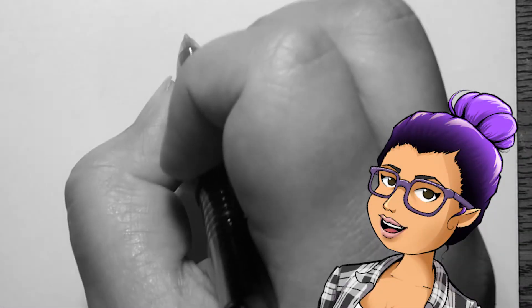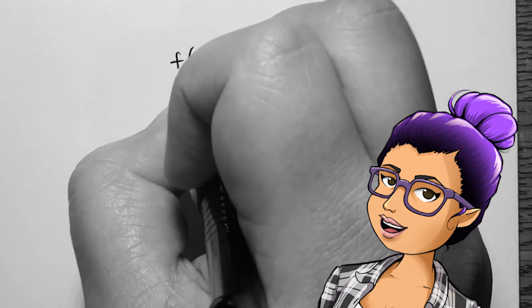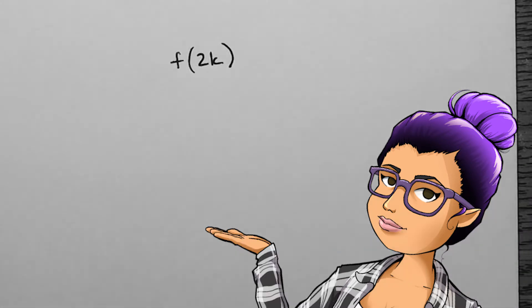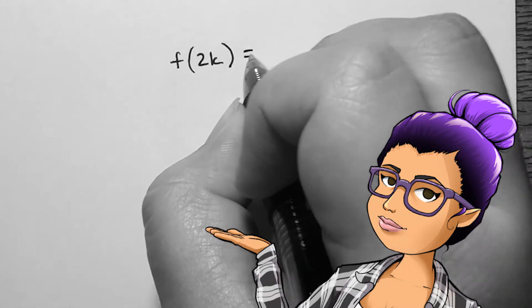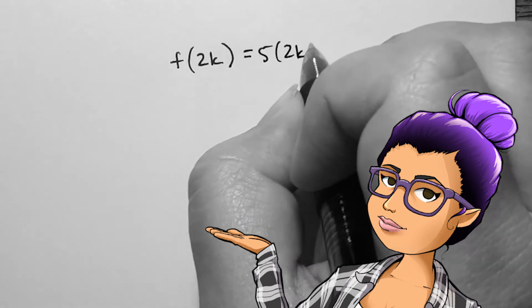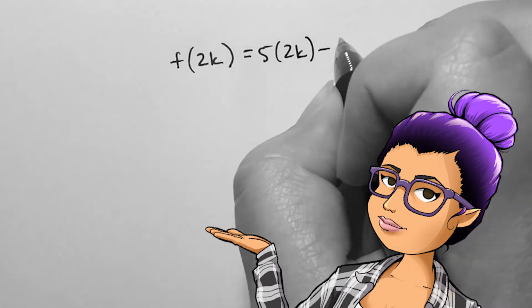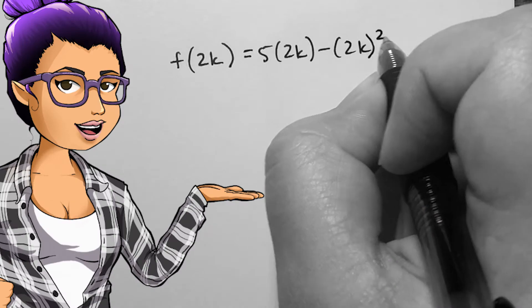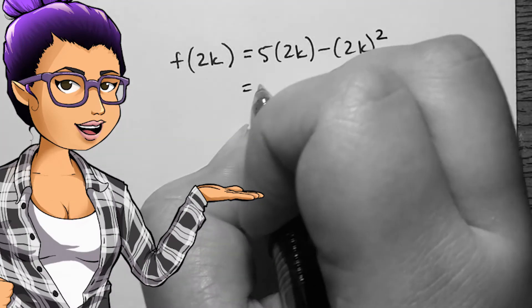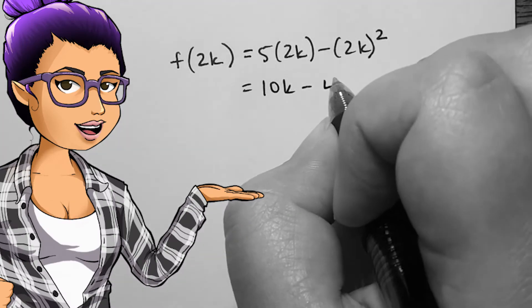Using the same function f, I am now supposed to find f of 2k. Replacing theta with 2k everywhere gives me f of 2k equals 5 times 2k minus 2k squared. Simplifying each term gives me 10k minus 4 times k squared.